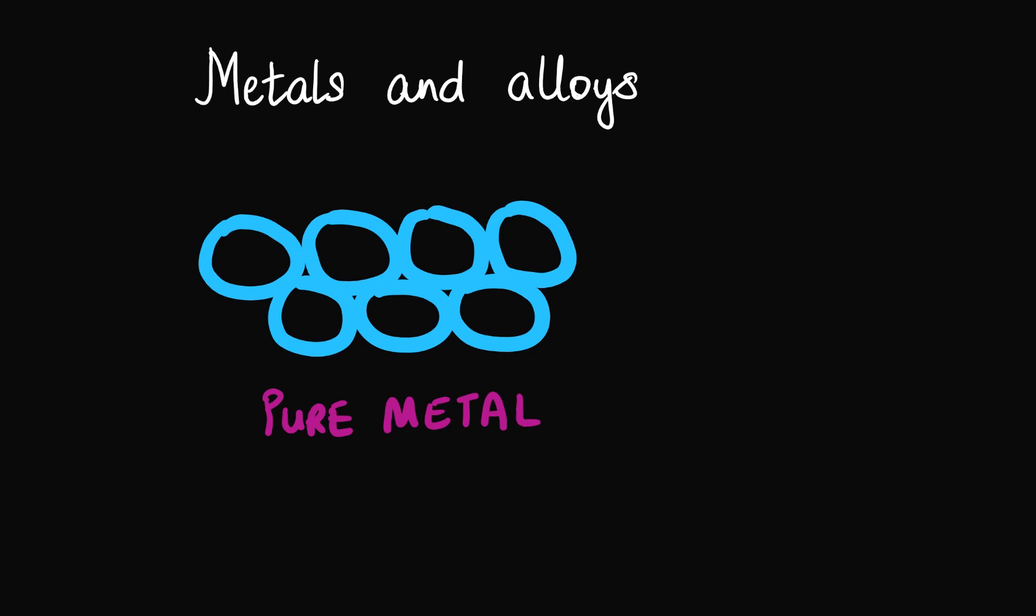So as you can see the atoms in a metal, in a pure metal, are arranged in regular layers.